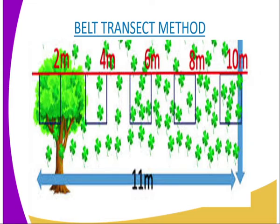Counts are made between the two ropes at marked points. Fewer belt transects are required to build up a realistic picture of distribution and evidence of land species in an ecosystem, compared to the line transect. A belt transect is more suitable in the estimation of land populations, and these can equally be used to estimate populations of animals.